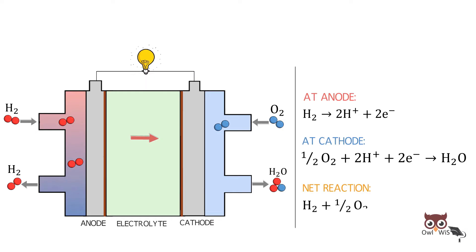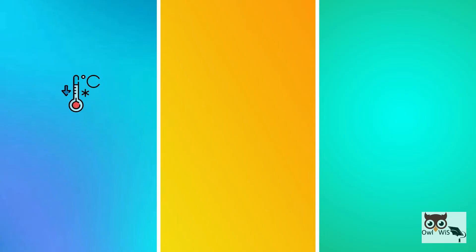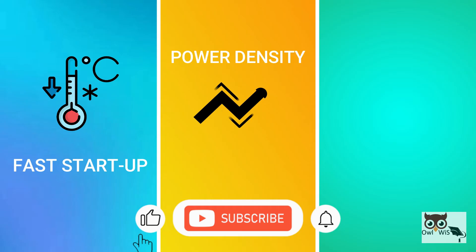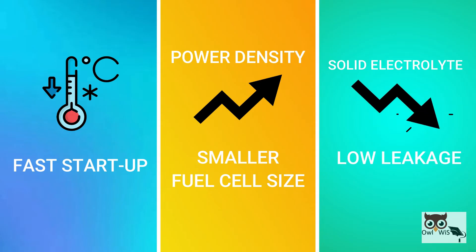PEM fuel cells have low temperature operation and hence fast startup. The power density is the highest among all available types of fuel cells. As we know, the higher the power density, the smaller the size of the fuel cell. Due to solid electrolyte, PEM fuel cell has much lower chance of leakage.